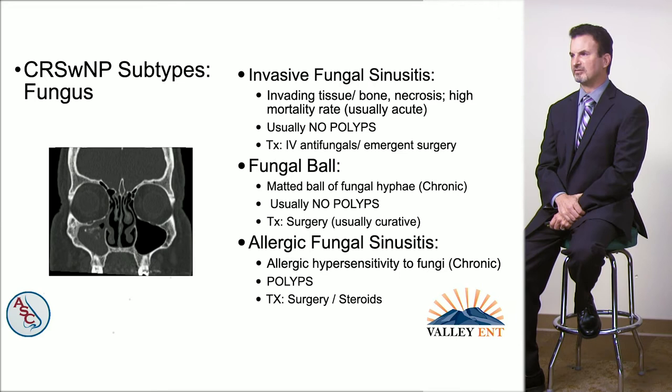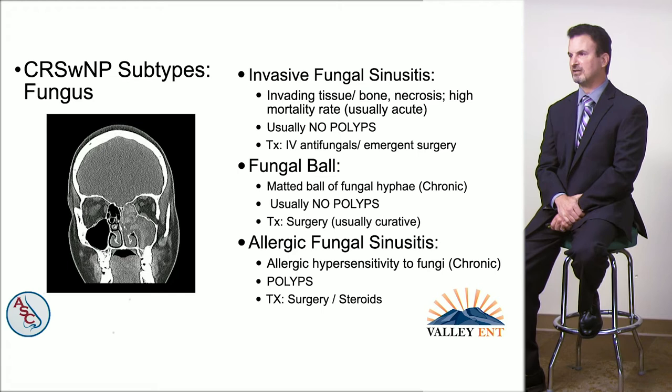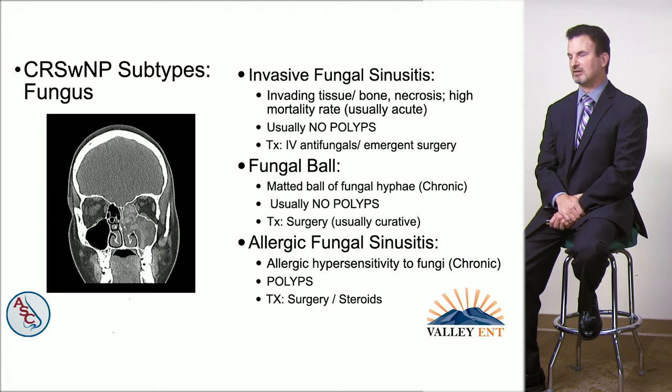We contrast that with a fungal ball, seen here in the right cheek sinus — a matted ball of fungus that is not an infection, usually without polyps, and a chronic condition. This is one of the few types of chronic rhinosinusitis that can be cured with surgery. The third type is allergic fungal sinusitis — another chronic condition where patients have a severe allergy to environmental fungus, resulting in severe nasal polyposis.